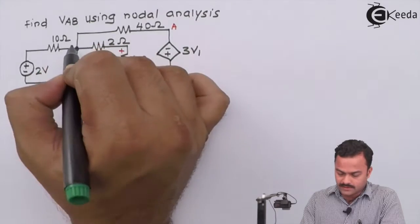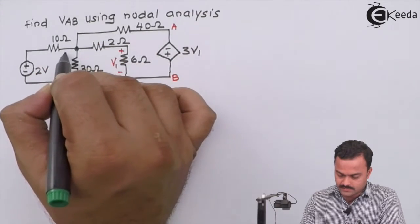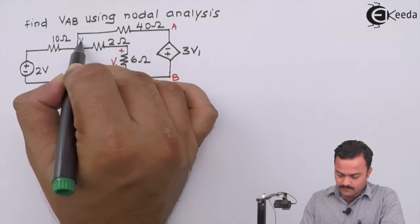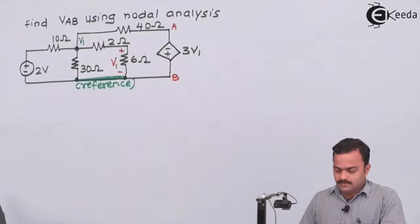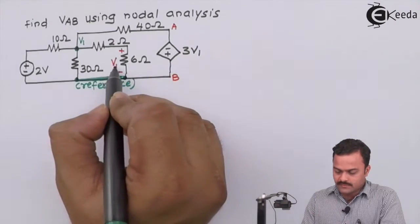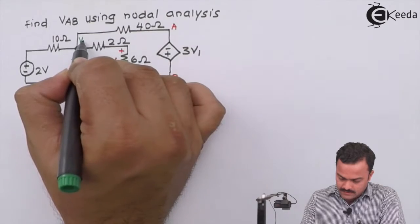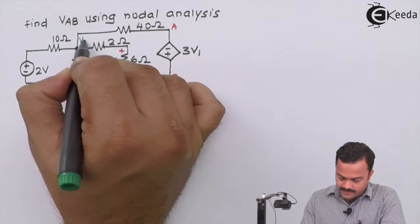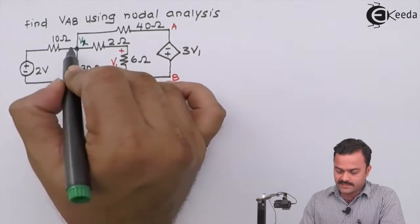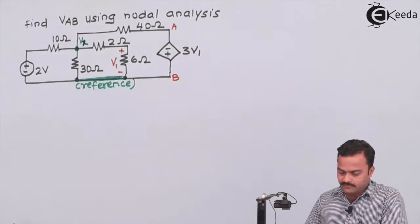So only one node we get and the potential of that node, let's mark this as V1. So V1 is this voltage. So in order to avoid confusion, we can mark this potential as Vx. So let's consider this as X node with a potential Vx.